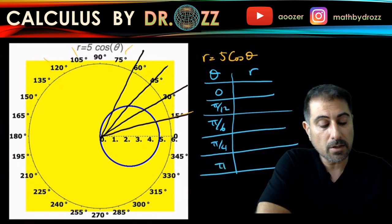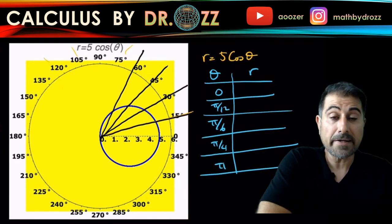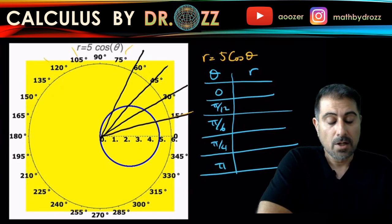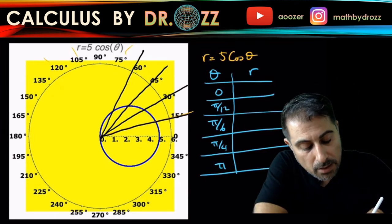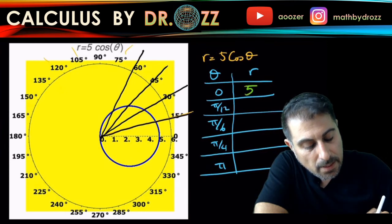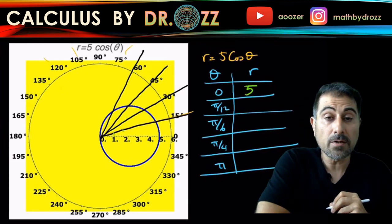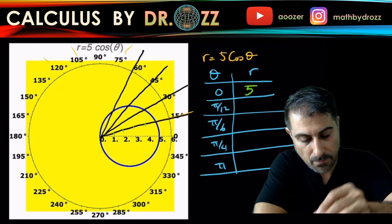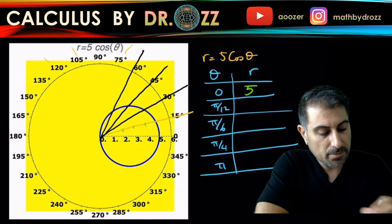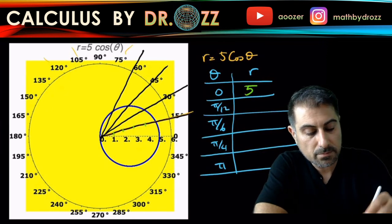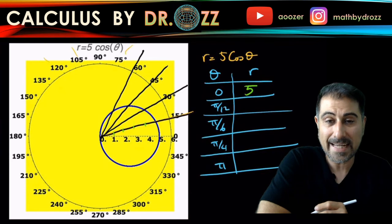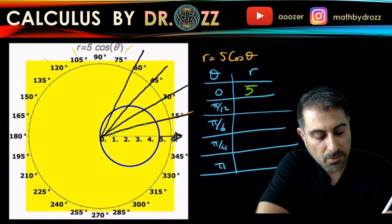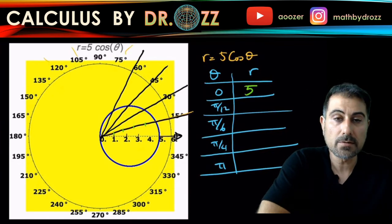So when you calculate r at those theta values, for example, for zero, it's five cosine zero and that's equal to five. You go ahead and then you walk five units out on the ray. So for example, let me just erase those. So theta equals zero is this ray here. This ray here, the x-axis in fact, and walking on that five units takes you all the way to this point. So you mark this point essentially.